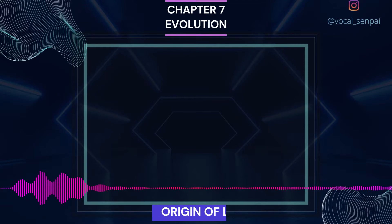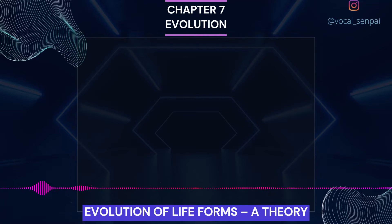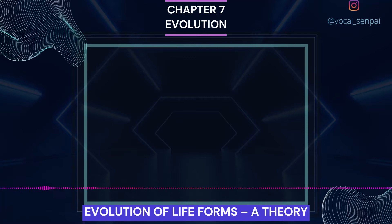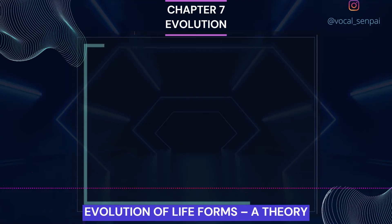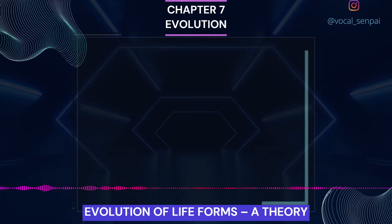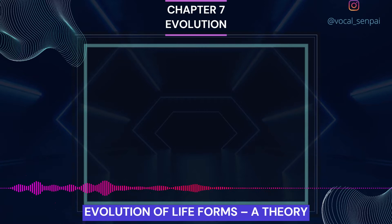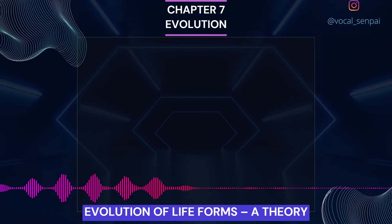Evolution of life forms: a theory. Conventional religious literature tells us about the theory of special creation. This theory has three connotations. One, that all living organisms, species or types that we see today were created as such. Two, that the diversity was always the same since creation and will be the same in future also. Three, that earth is about 4000 years old. All these ideas were strongly challenged during the 19th century.